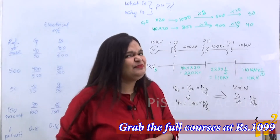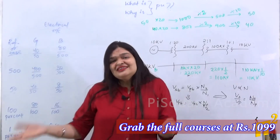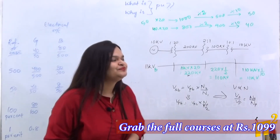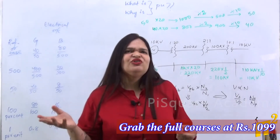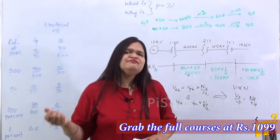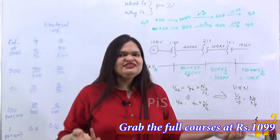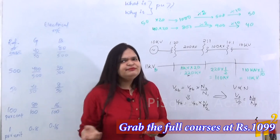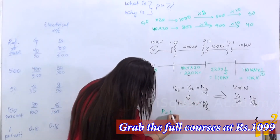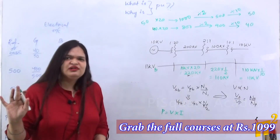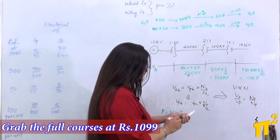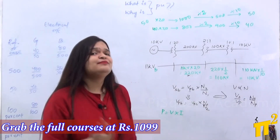Now coming to the key question: why do we not use percent but instead use per unit in case of power system networks? In power systems, quantities undergo mathematical operations — summation, subtraction, multiplication, and so on. Let me take a very common formula: power P = V × I. Let's examine what happens when we use percent versus per unit for this multiplication.